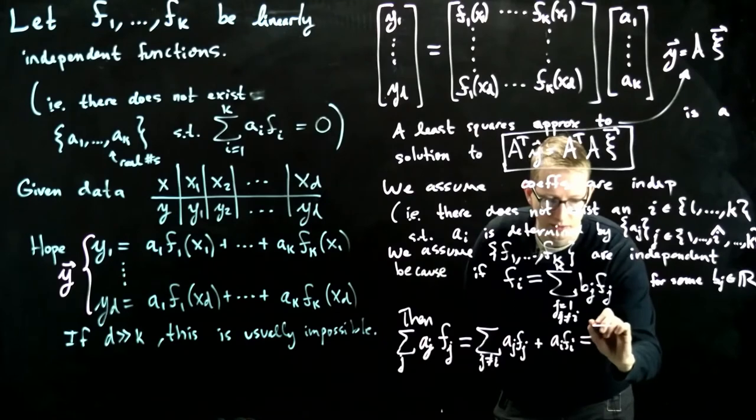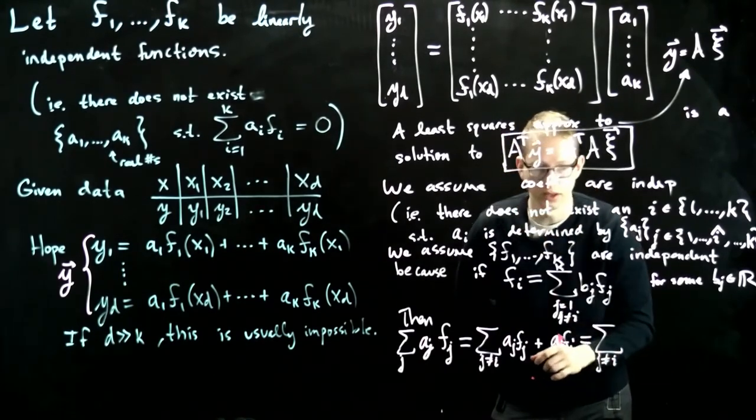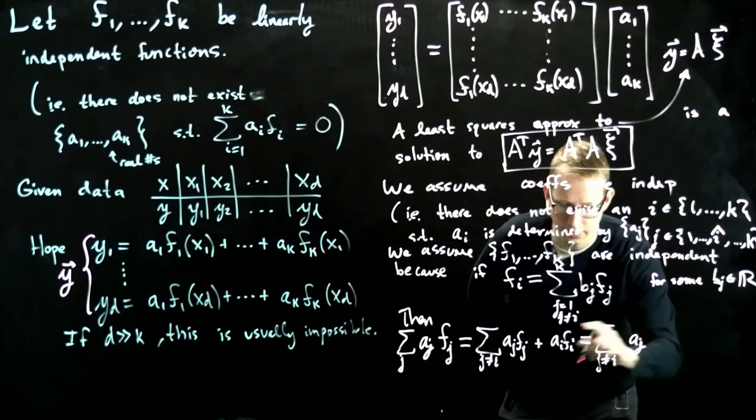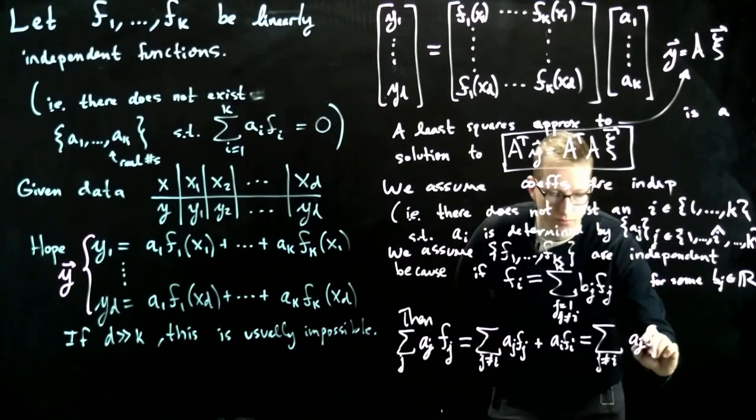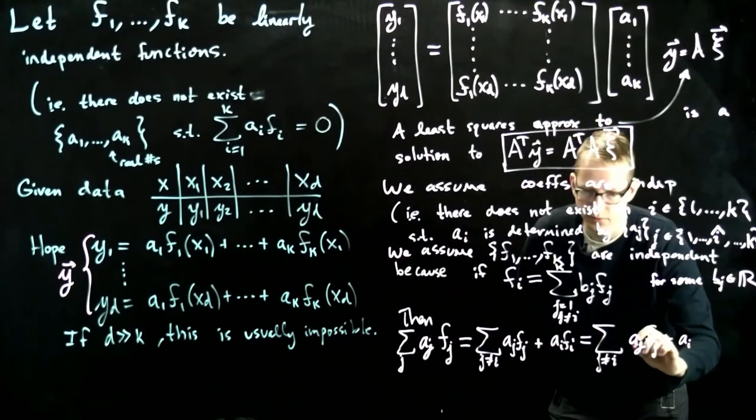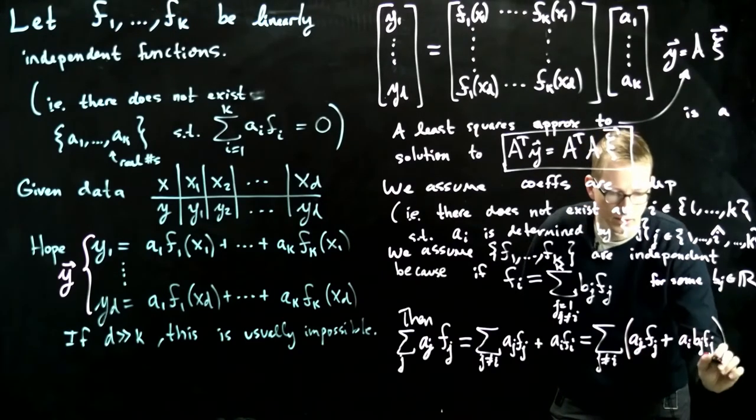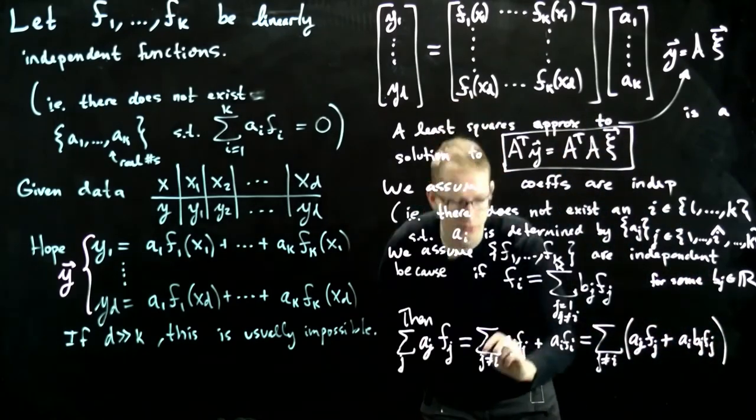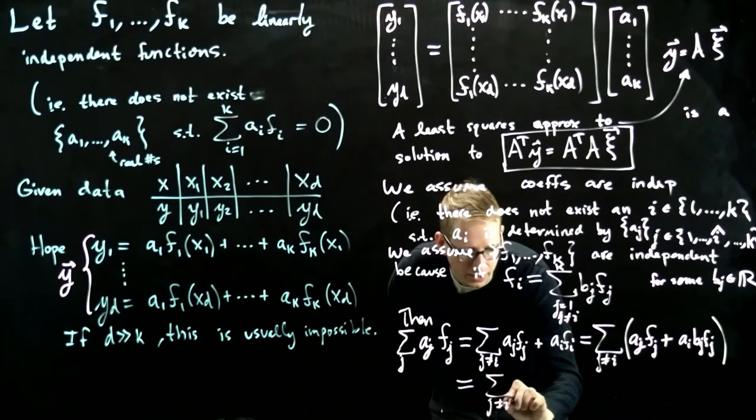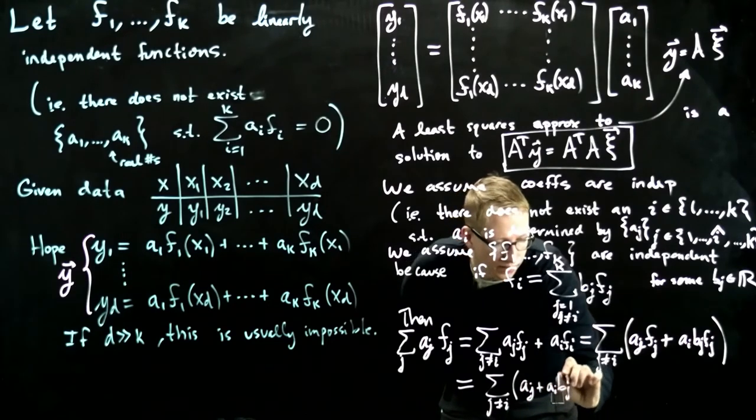So this equals sum over all j not equal to i, another sum over all j that are not equal to i. So we have aj*fj, plus ai times bj*fj, and then this is all in parentheses. And now you notice that fj is a common factor. So when you factor that out, you get sum j not equal to i, and then this is (aj + ai*bj)*fj.